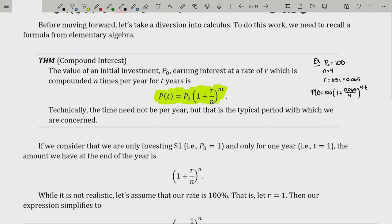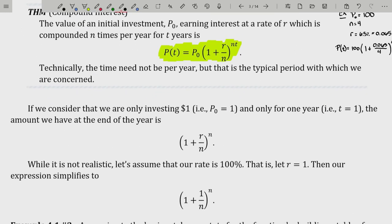Now let's continue forward to really get into calculus. Consider we're only investing $1, which is easy to work with, for only one year. So P₀ = 1 and T = 1. Then the amount we have at the end of the year is (1 + r/n)^n. You just replace T with one and P₀ with one.